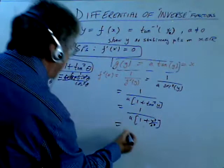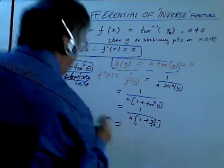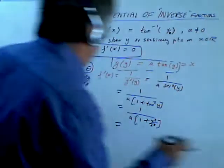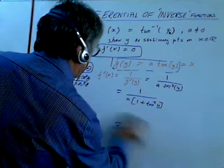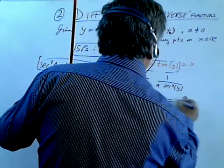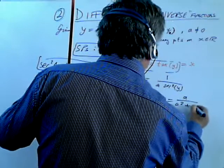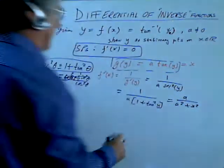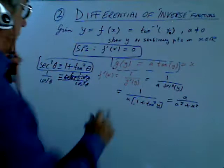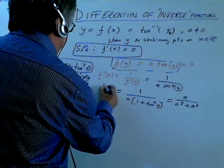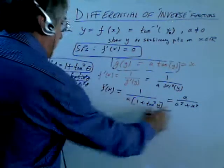And that simplifies to, I'll write it over here because I'm running out of room, sorry. So that just simplifies at the end of the day to a over a² + x². Okay? So that is what f'(x) is. So we've got that.